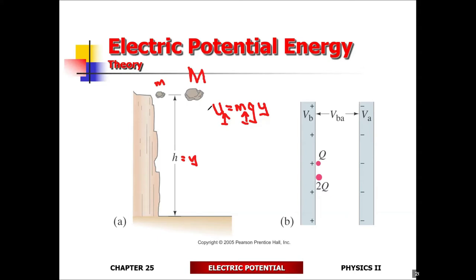The bigger mass is going to have more energy stored in it. So which one is going to have more potential energy? The bigger mass for a given distance. Now let me change the scenario: which one is at a higher elevation? Which one has more voltage or potential? Which one is going to have more energy stored per mass? Notice that they're going to be the same — it's going to be the same. Voltage potential in this case means just the height, the elevation.